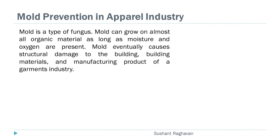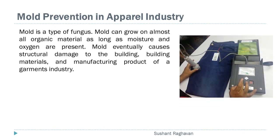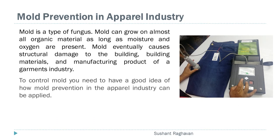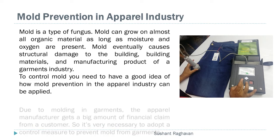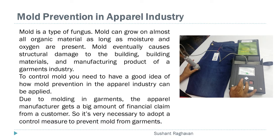Mold is a type of fungus. Mold can grow on almost all organic material as long as moisture and oxygen are present. Mold eventually causes structural damage to the building, building materials, and manufacturing products of a garments industry. To control mold, you need to have a good idea of how mold prevention in the apparel industry can be applied. Due to molding in garments, the apparel manufacturer gets a big financial claim from a customer, so it's very necessary to adopt a control measure to prevent mold from garments.